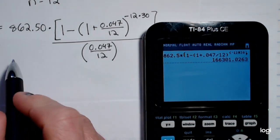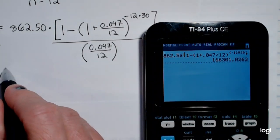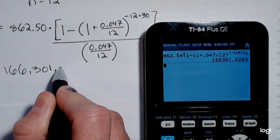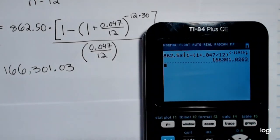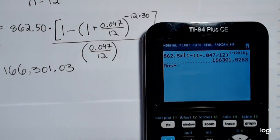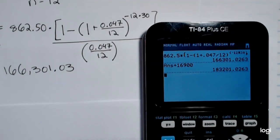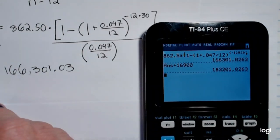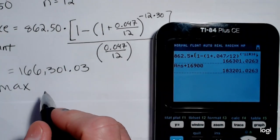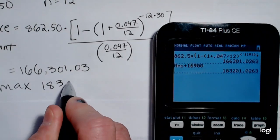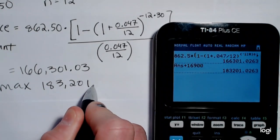That answer is $166,301.03, but this is not including the down payment. Adding in that down payment of $16,900, the actual maximum purchase price would be $183,201.03.